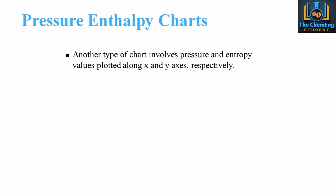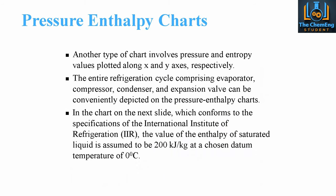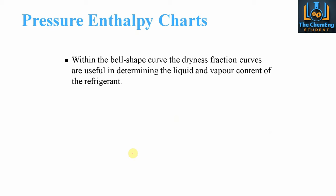Another chart type plots pressure and enthalpy on the x and y axes. The entire refrigeration cycle — comprising the evaporator, compressor, condenser, and expansion valve — is conveniently depicted on a pressure-enthalpy chart. Per the International Institute of Refrigerants (IIR) convention, the enthalpy of saturated liquid is assumed to be 200 kJ/kg at a chosen temperature of 0°C. Within the bell-shaped curve, the dryness fraction curves are useful in determining the liquid and vapor content of the refrigerant — a key parameter showing how much energy can be transported to vaporize saturated liquid into saturated vapor.